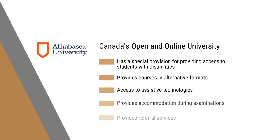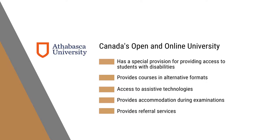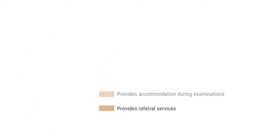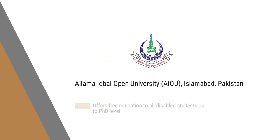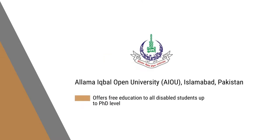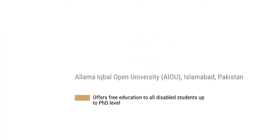Athabasca, Canada's Open University, has a special provision for providing access to students with disabilities. The university provides courses in alternative formats, access to assistive technologies, and examination accommodations and retrieval services. Athabasca, Canada's Open University of Pakistan also offers free education to people with disabilities up to the PhD level.